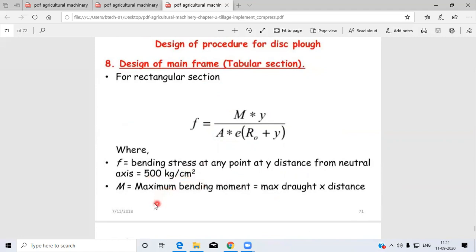M is the maximum bending moment, taken as maximum draft multiplied by distance.